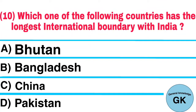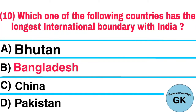Question number 10. Which one of the following countries has the longest international boundary with India? A. Bhutan, B. Bangladesh, C. China, D. Pakistan. Answer: Bangladesh.